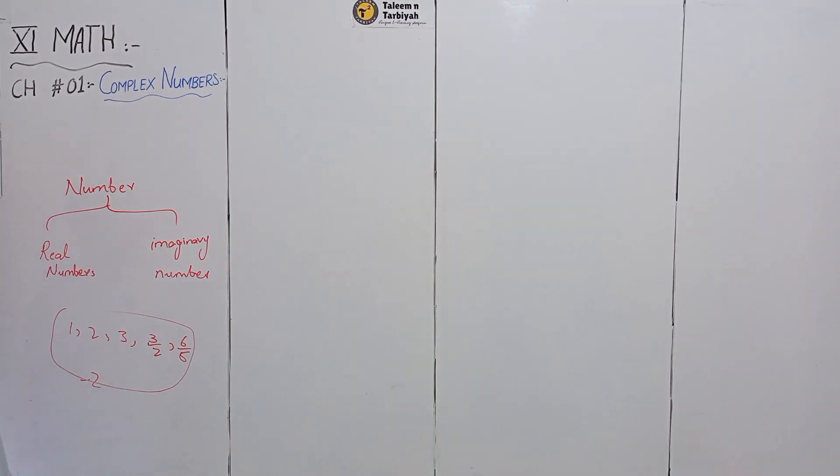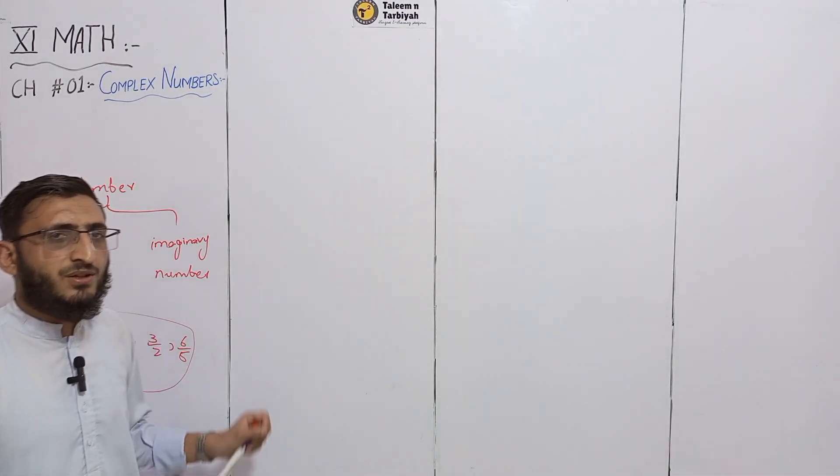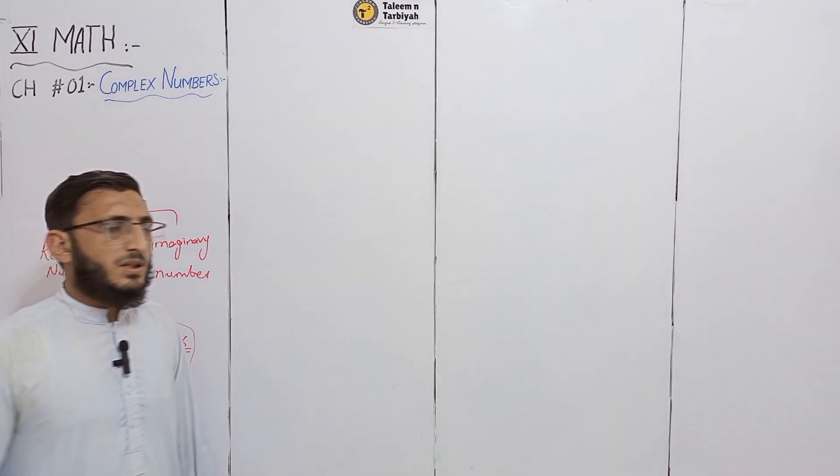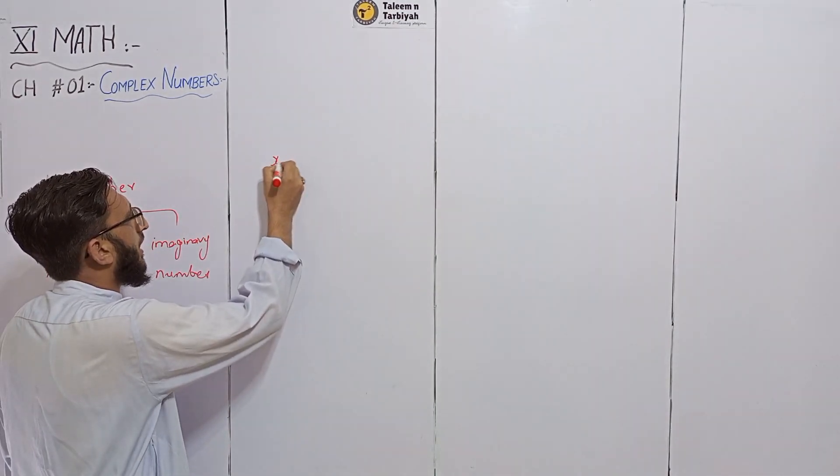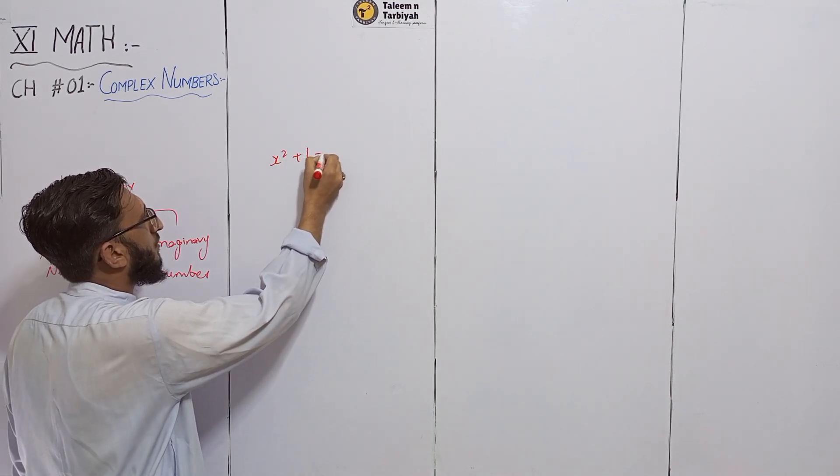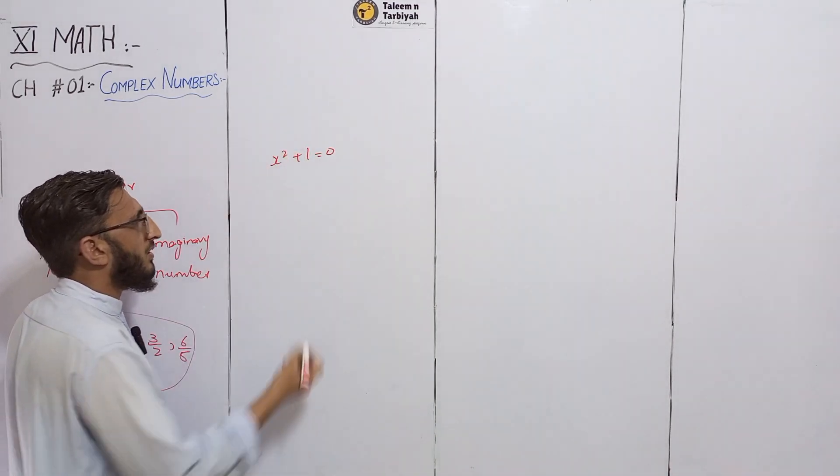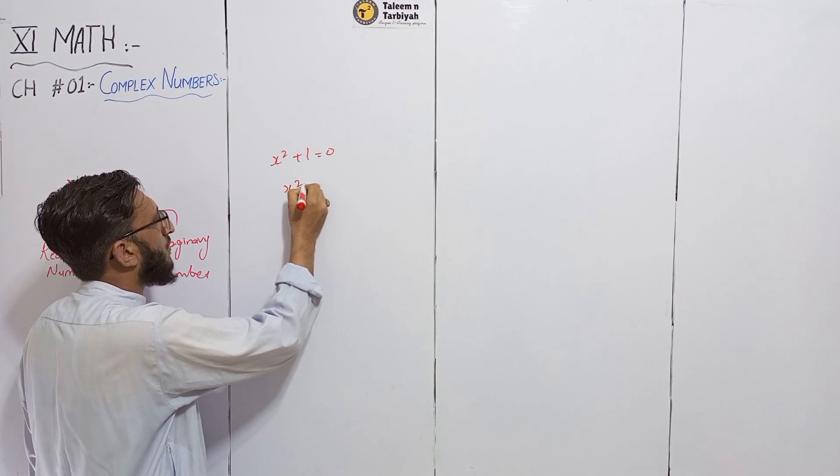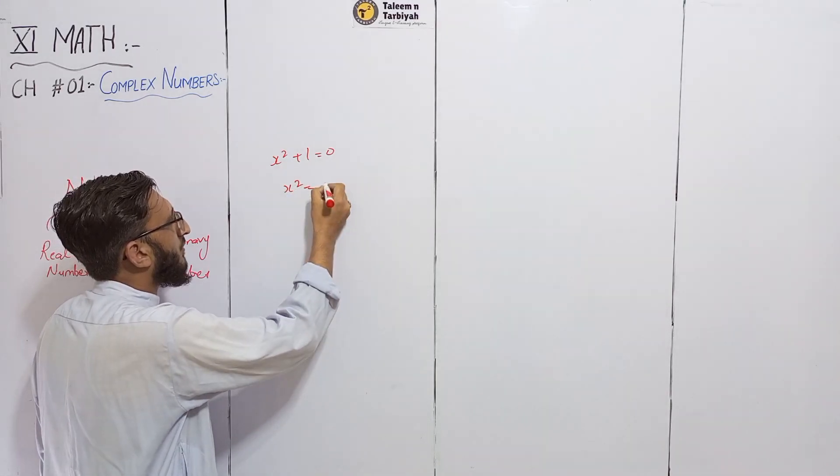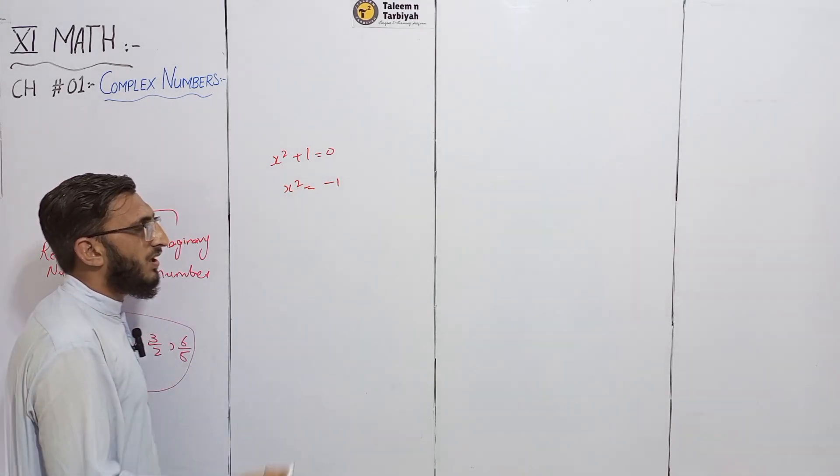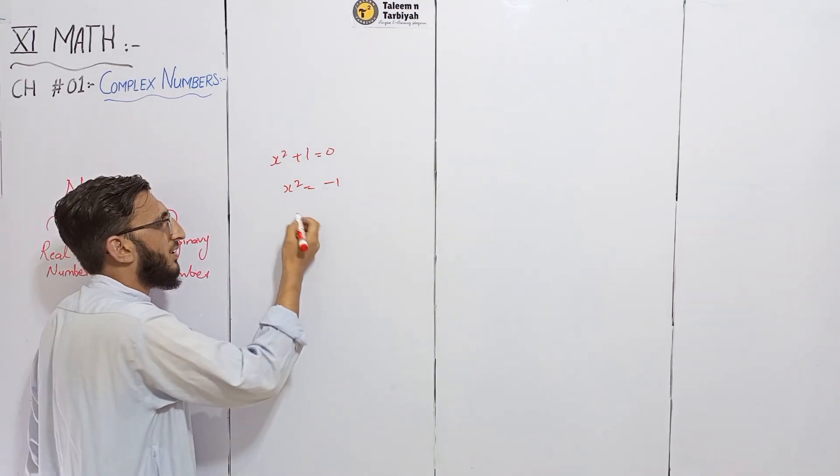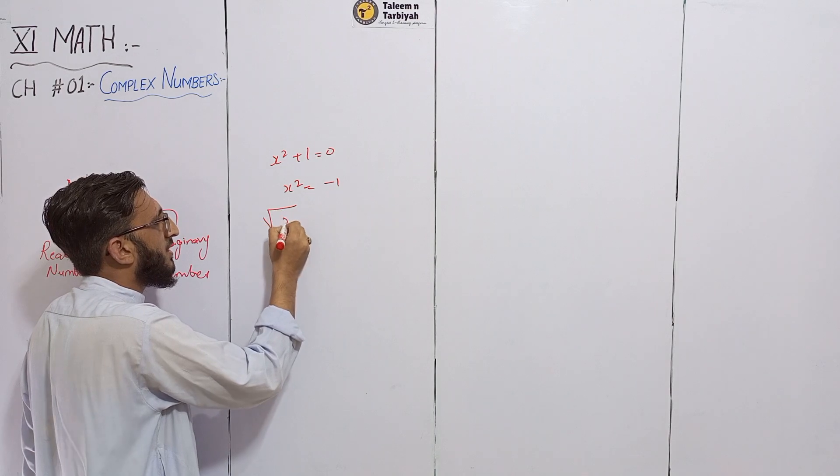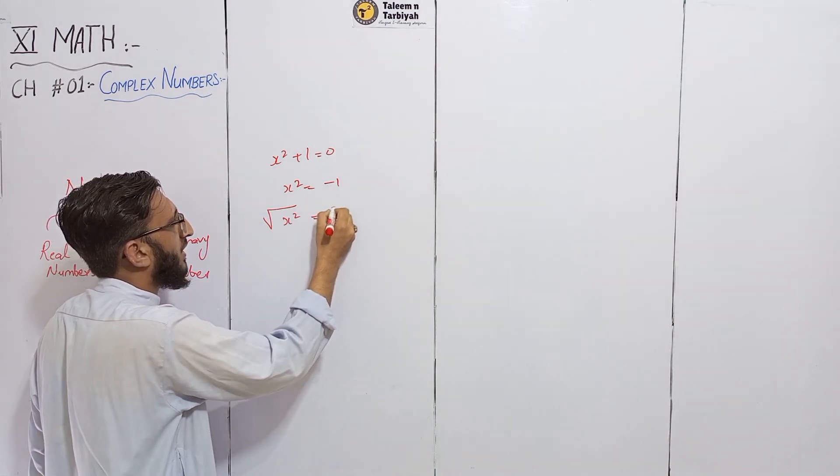Now, we have this number which we define. Suppose we have a question: x square plus one is equal to zero. Solving this equation, we move the one to get x square is equal to minus one.